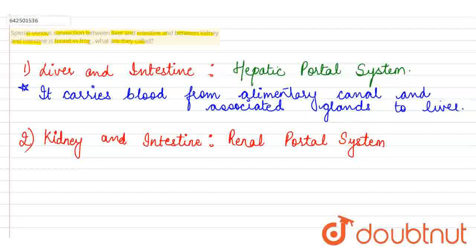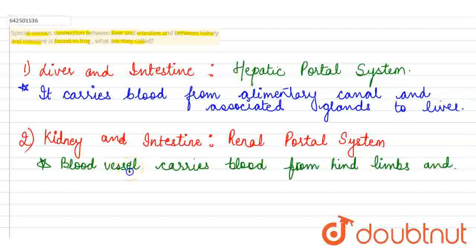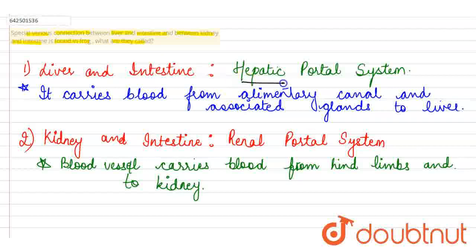In the renal portal system, the blood vessels carry blood from the hind limbs and transfer it to the kidneys. So, the first was the hepatic portal system and the second is the renal portal system.